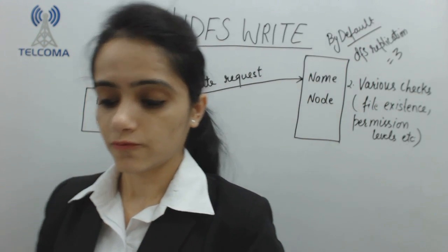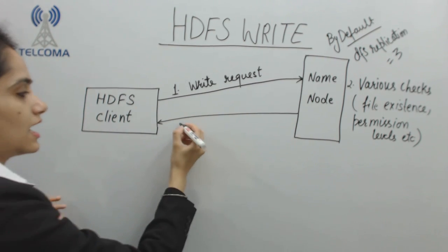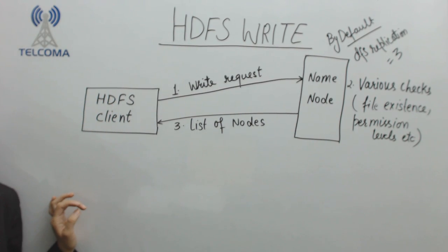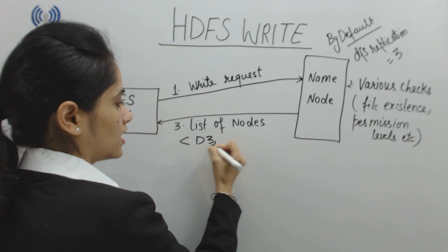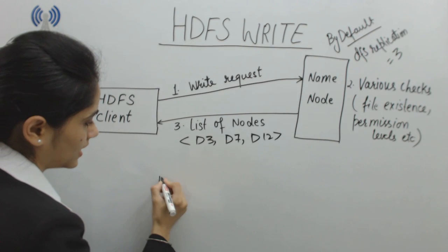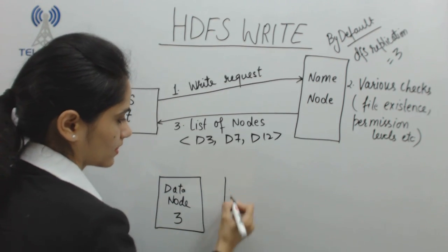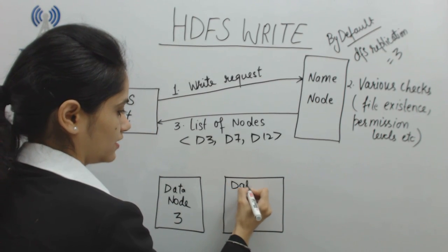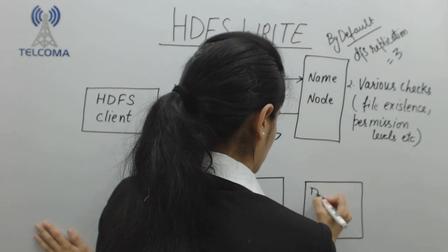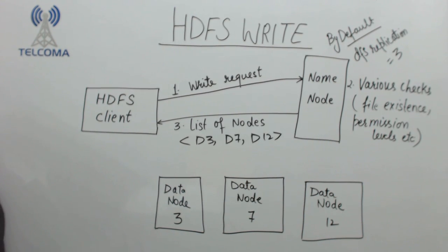By default we require three file replications. In response, the name node sends a message back to the HDFS client containing a list of available nodes on which the data has to be written. For example, data node 3, data node 7, and data node 12 are available — these are the data nodes assigned by the name node.